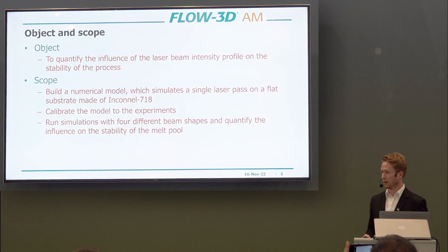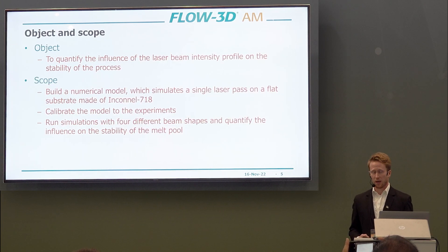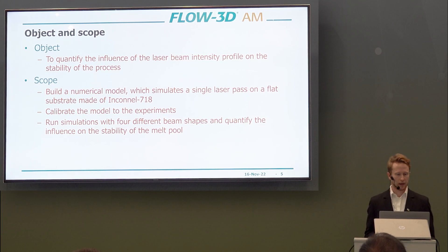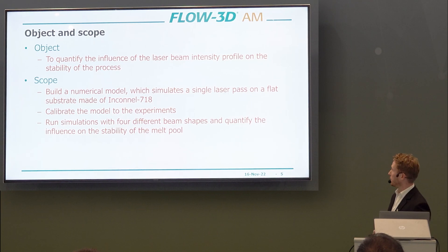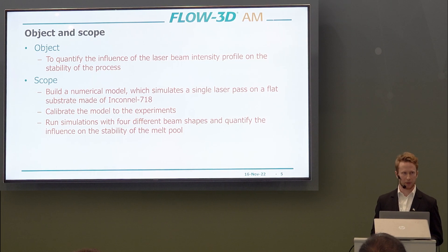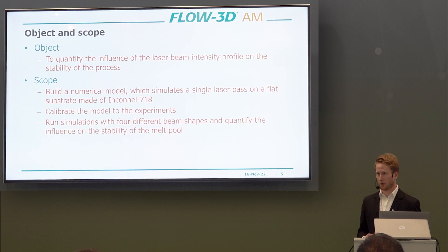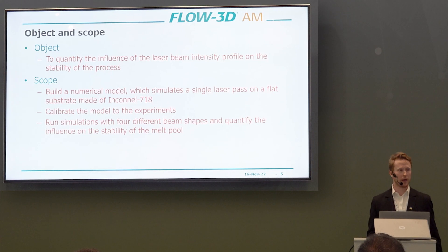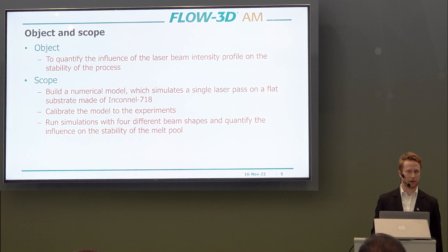In this particular project, we look at the possibility of quantifying the influence of the laser intensity profile on the stability of the process. The scope includes building a numerical model — simulating a single laser pass on a flat substrate made of Inconel 718 — calibrating the model to experiment, and then using the calibrated model to observe and quantify the influence of beam shaping on the melt pool.